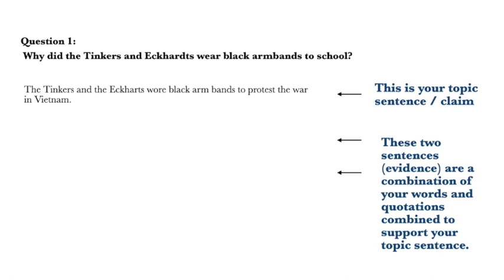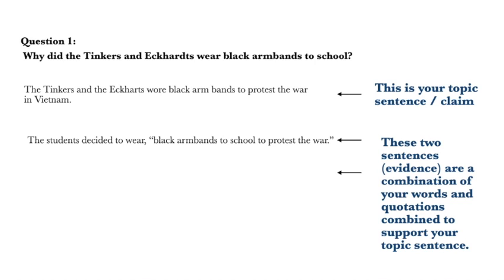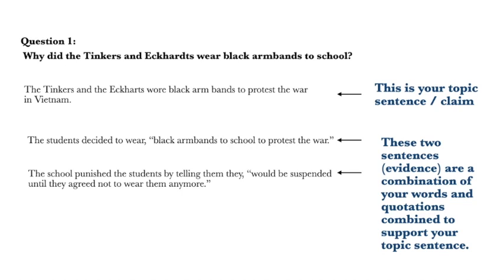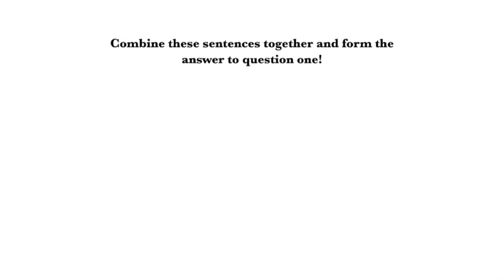The next sentences are what we're going to call evidence — quotations combined with your words to support the topic sentence. They're there to show that your claim is correct or valid. The first evidence sentence: the students decided to wear black armbands to school to protest the war. The school punished the students by telling them they would be suspended until they agreed not to wear them anymore. These two sentences are a combination of your words and pieces of a quotation from the article to form your final answer.